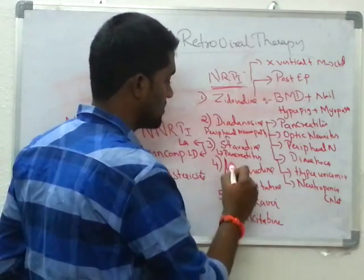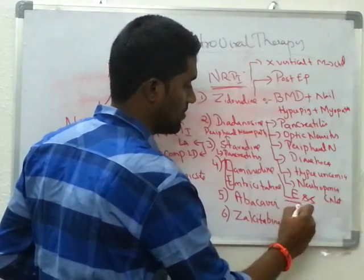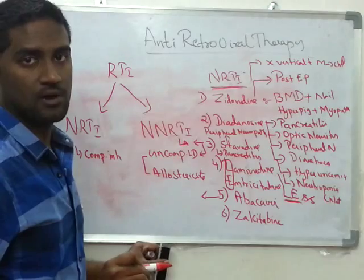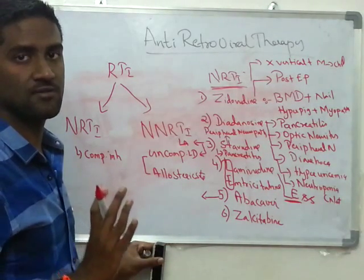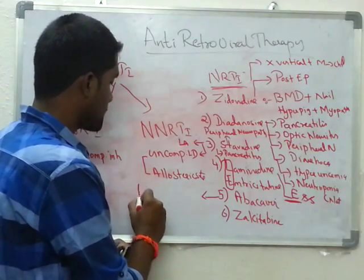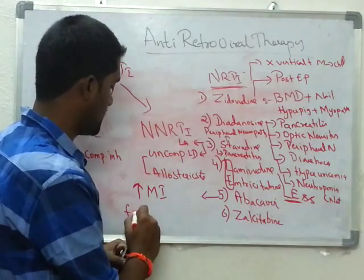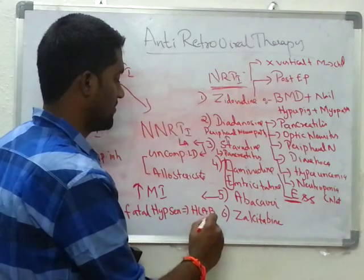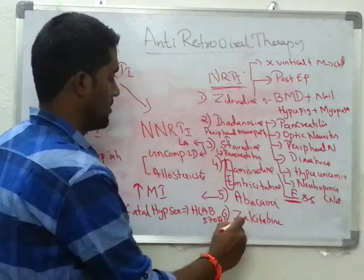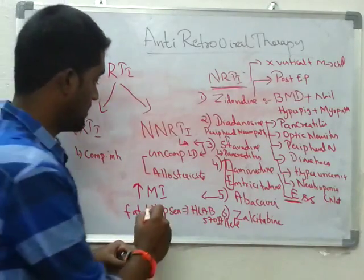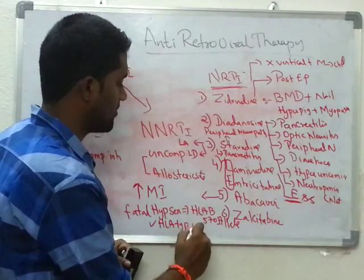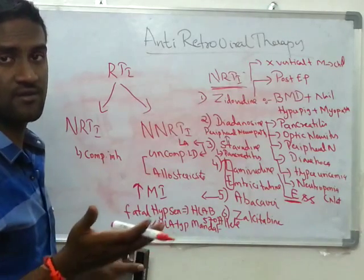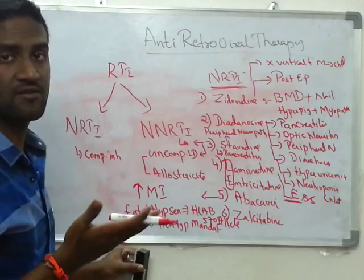Coming to drugs with less side effects — remember: less L for Lamivudine, E for Emtricitabine. Coming to Abacavir, first thing to remember is that though it sounds like a protease inhibitor, it is not. There will be increased risk of myocardial infarction, and very importantly, fatal hypersensitivity reaction with HLA-B5701 allele. So before starting Abacavir, HLA typing is mandatory. This was previously asked in exams.